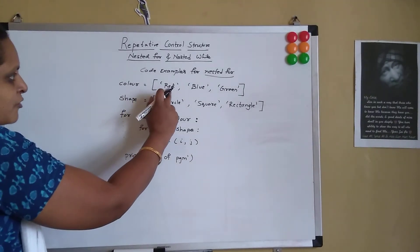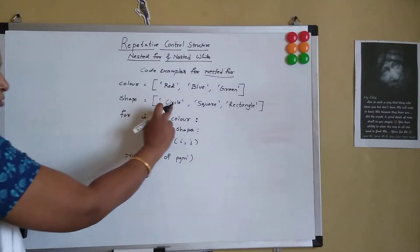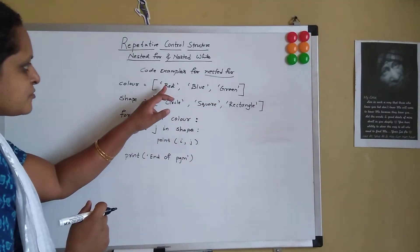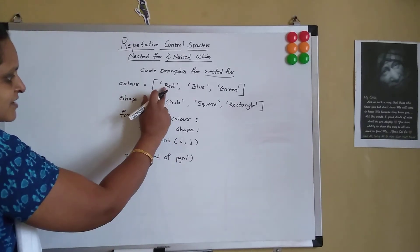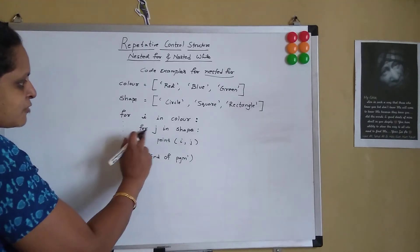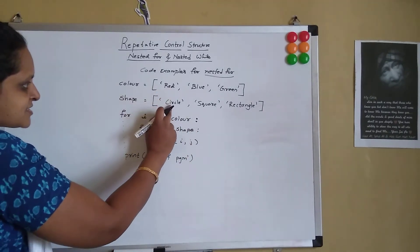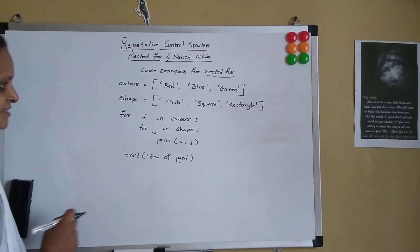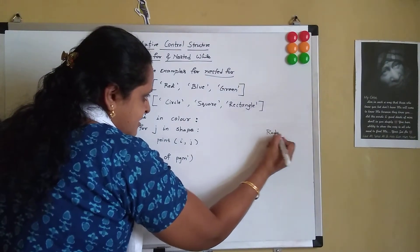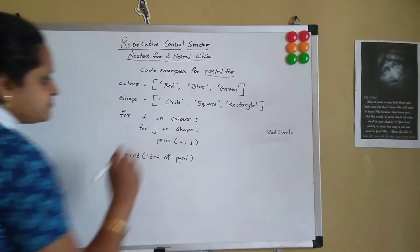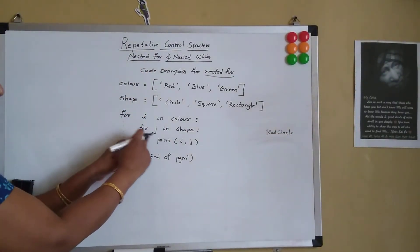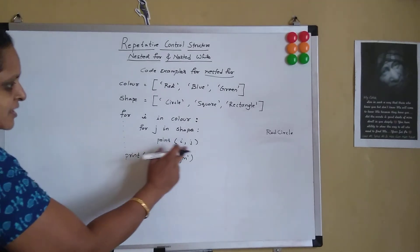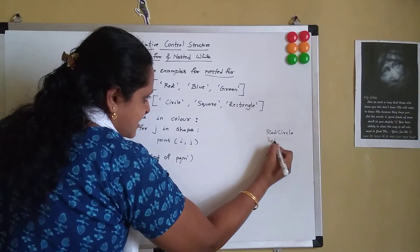So for every value of i, the j value iterates over the entire contents of the list. For i in color, first it will take red, so i is red. For j in shape, j is circle. Print i, j — so initially i would be red and j would be circle, so it will print 'red circle' on the console. Now the inner loop increments — j becomes square, but i would still be red. So it prints 'red square'.